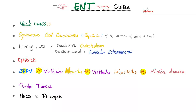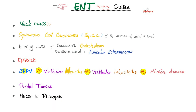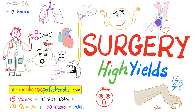In the next video, we'll talk about otosclerosis. If you want to learn more about neck masses, squamous cell carcinoma of the head and neck mucosa, epistaxis, benign paroxysmal positional vertigo, and other conditions, download the surgery high-yield course at medicosisperfectionist.com, which also covers trauma surgery and orthopedic surgery.